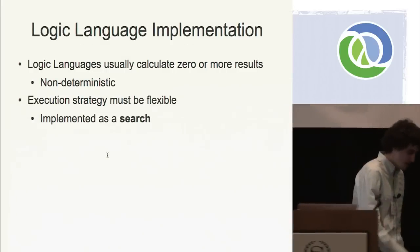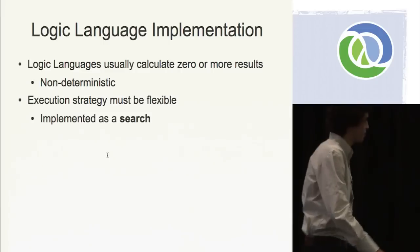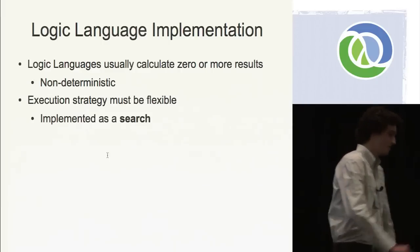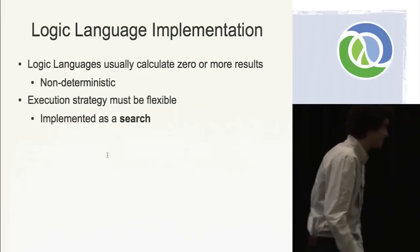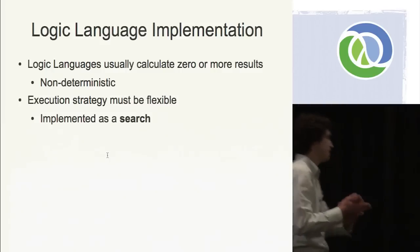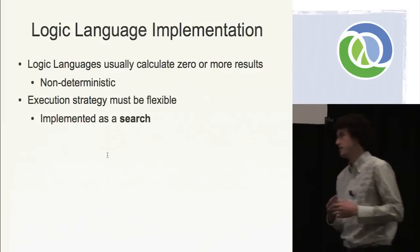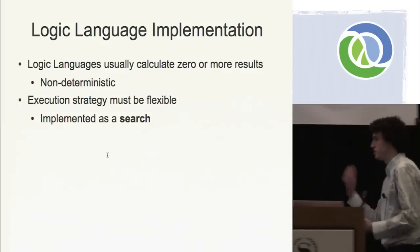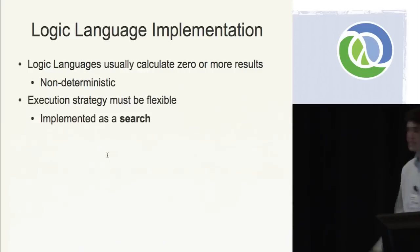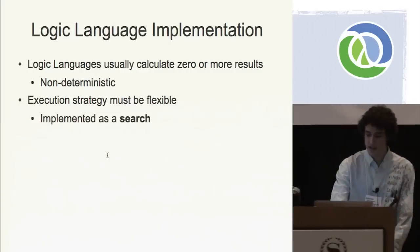So how do we implement this stuff? Logic languages usually calculate zero or more results — this seems more flexible than most traditional languages, so it's non-deterministic. The execution strategy must be more flexible, and basically it's implemented as a search. We search for an answer: do we have enough answers? No — let's go search for more. Do we have enough? Yes — now we return.